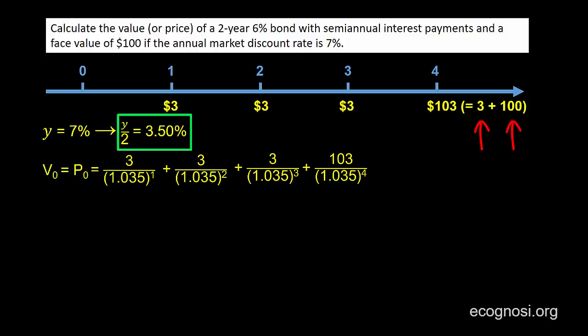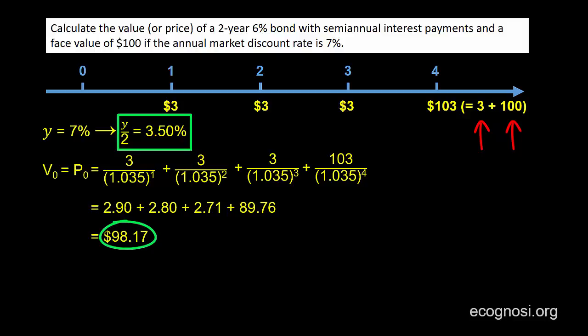The discounted values give us a final bond value of $98.17, rounded to 2 decimal places. Notice that the price of this bond is lower than its par value of $100. Therefore, the bond is trading at a discount to par.